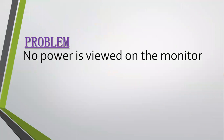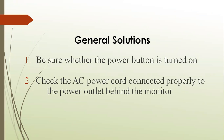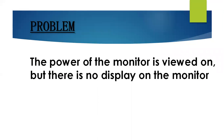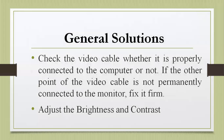Next problem: No power is viewed on the monitor. Solution: Be sure whether the power button is turned on. Check that the AC power cord is connected properly to the power outlet behind the monitor. Next problem: The power of the monitor is on but there is no display on the monitor. Solution: Check the video cable whether it is properly connected to the computer. If the other end of the video cable is not permanently connected to the monitor, fix it. Adjust the brightness and contrast.